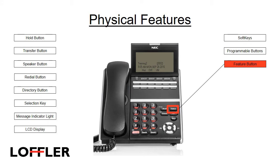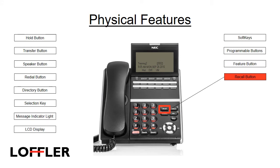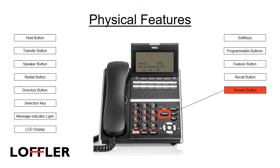The feature button is used occasionally to access telephony feature setup. The recall button provides fresh dial tone while connected with outside lines. The answer button allows you to answer an external call that's ringing your phone; the first call will be put on hold automatically. To return to the first call, press the flashing line key. This feature is only functional with outside lines — an internal call does not activate the answer key.